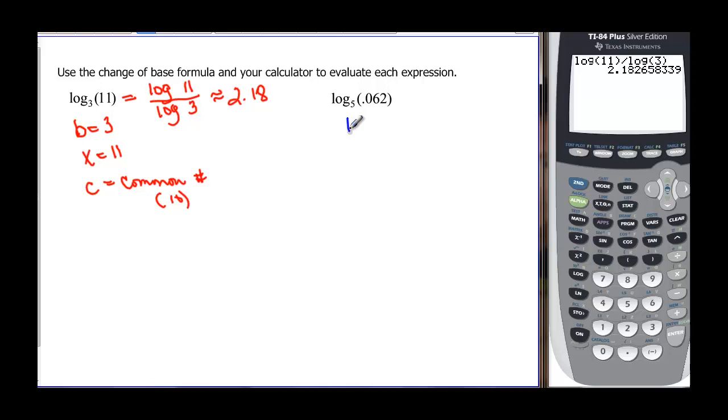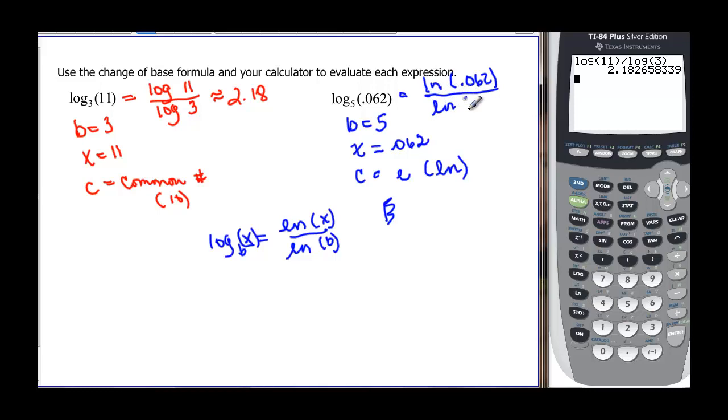Now when we do this one, we're going to let b be five, and the x of the formula is 0.062, and then the c, this time we're going to let it be the base be e, or we're going to take the natural log. It was log base b of x, and in this case over here, it's going to be the ln of the inside, which is x, divided by the natural log of the old base. So ln of what's inside the parenthesis, 0.062, divided by the natural log of the base, which is five.